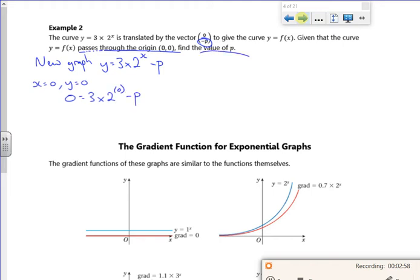So I've got 0 is 3 times 2 to the power 0 minus p. And I can find p now, because I've got the equation and I've got the coordinate point. Anything to the power 0 is 1. So I've got 3 lots of 1 take p. So p must be 3. That's quite nice, that's quite straightforward. All I've done is use the information I've got.